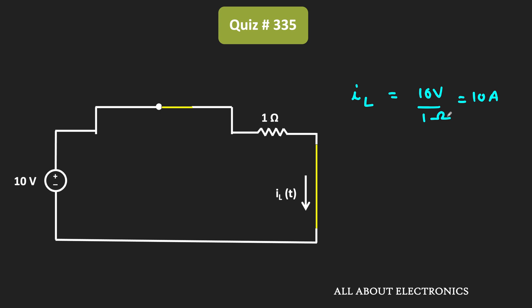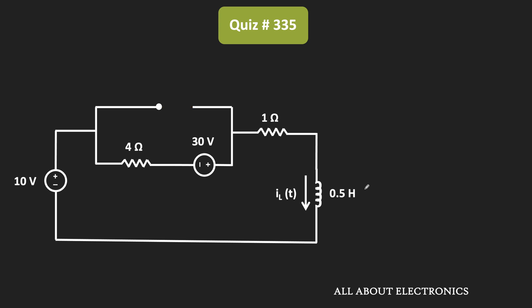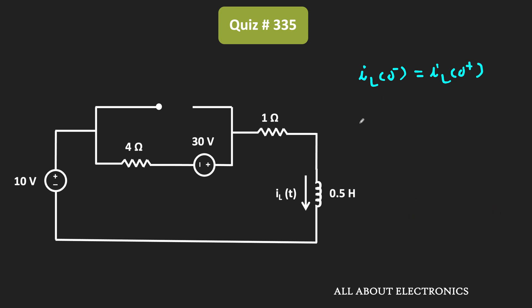This will be the inductor current just before the switch is getting opened. We can say that this current IL is equal to IL(0-), that is the current through the inductor just before the switch is getting opened. Now let us see the circuit once the switch is getting opened. The circuit will look like this. As you are aware, the inductor opposes instantaneous change in the current. That means just after the switch is getting opened, the inductor current will remain the same. So we can say that IL(0-) is equal to IL(0+), which means IL(0+) is also equal to 10A.